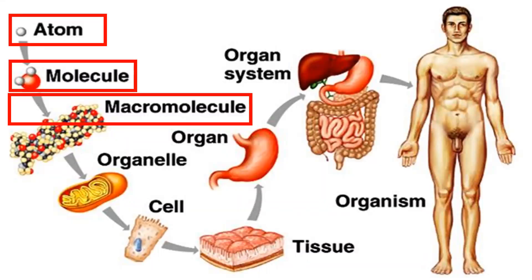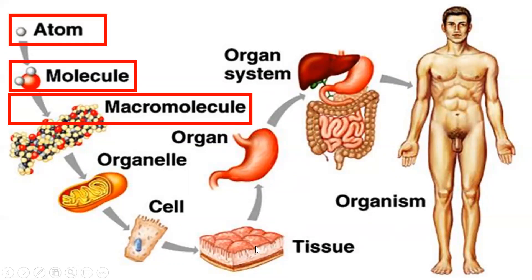Let's do a quick review of the biological hierarchy. The smallest substance that anything can be broken down to by ordinary chemical means is an atom. Atoms come together to form molecules, molecules form macromolecules, macromolecules form organelles, organelles form cells, cells of the same type form tissue, tissue forms organs, organs form organ systems — for example the stomach and the digestive system — and all organ systems together form an organism, in this case a human.